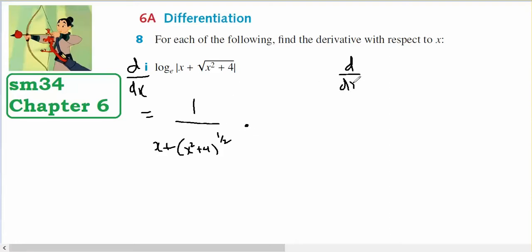So now I'm looking for the derivative of x plus x squared plus 4 to the half, and that will equal 1 plus a half x squared plus 4 to the negative a half, times the derivative of the inside, which is 2x.